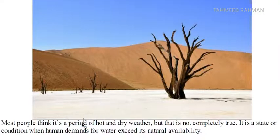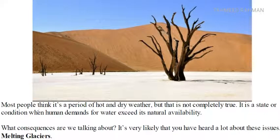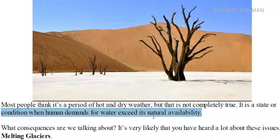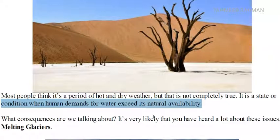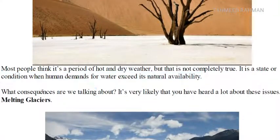Most people think drought is a period of hot and dry weather, but that's not completely true. It is a state or condition when human demands for water exceed its natural availability. This happens even in countries like Bangladesh, which is known for having a lot of rainfall — for months there will be no rainfall in the northern part of the country. The soil often breaks down and you can see cracks in the ground due to lack of moisture or water content.